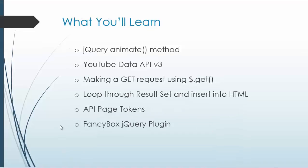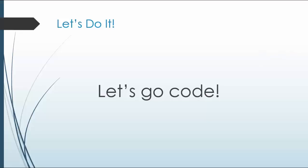You'll learn a lot in this project. We'll look at the jQuery animate method for the search box, the YouTube Data API, making GET requests using the get method, looping through a result set and dynamically inserting it into the HTML, and API page tokens and the FancyBox jQuery plugin, which we'll use to watch the videos. There's a lot to learn in this chapter — let's get started.